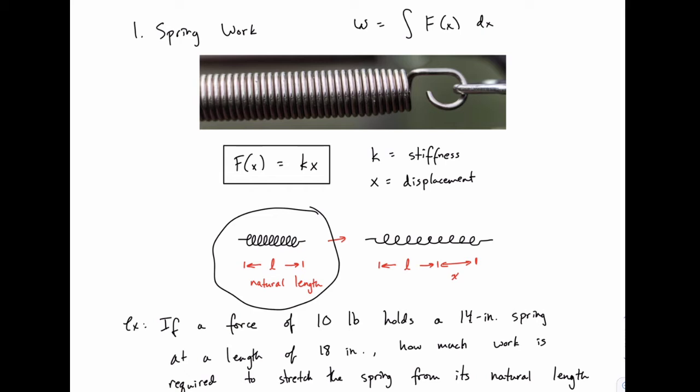And every spring has a natural length to it. So if you leave a spring sitting on the counter, it'll compress or stretch to some natural length based on the coils and material and so on. If you stretch that, as you do so, you create a displacement which we're going to call x.